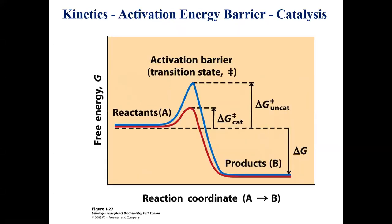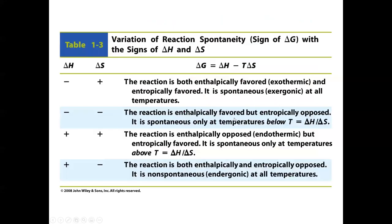Free energy on the y-axis represents thermodynamics — the difference between product and reactant free energy. Kinetics is represented by the activation energy barrier. Without a catalyst, the activation energy barrier is high; with a catalyst, that barrier is lowered and the reaction is sped up. Free energy is comprised of enthalpy and a component of entropy.